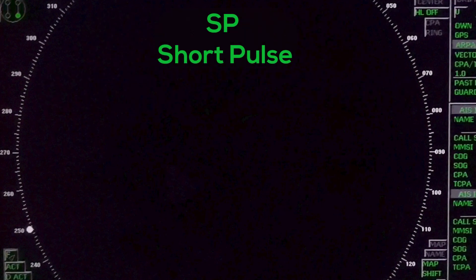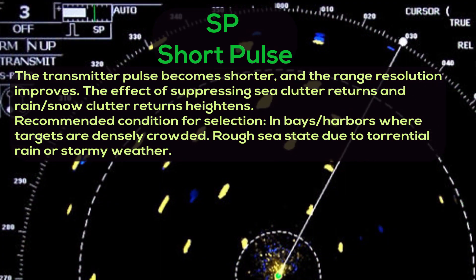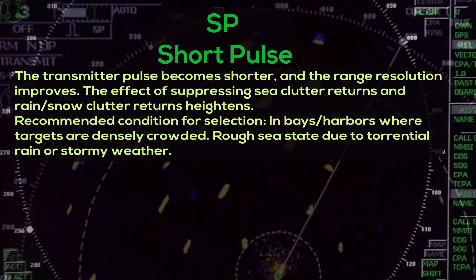S.P. – Short Pulse: The transmitter pulse becomes shorter and the range resolution improves. The effect of suppressing sea clutter returns and rain or snow clutter returns heightens. Recommended condition for selection: in bays and harbors where targets are densely crowded, or in rough seas due to torrential rain or stormy weather.